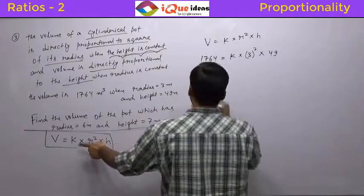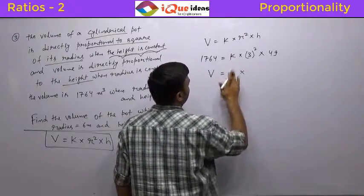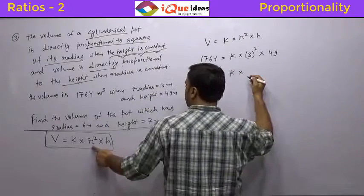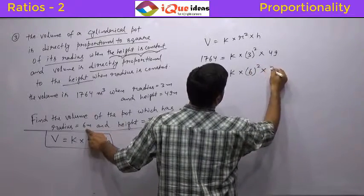Now the second situation we have to calculate volume V equal to k into but the radius and the heights are given. Radius is 6 meters. So 6 square into 7.